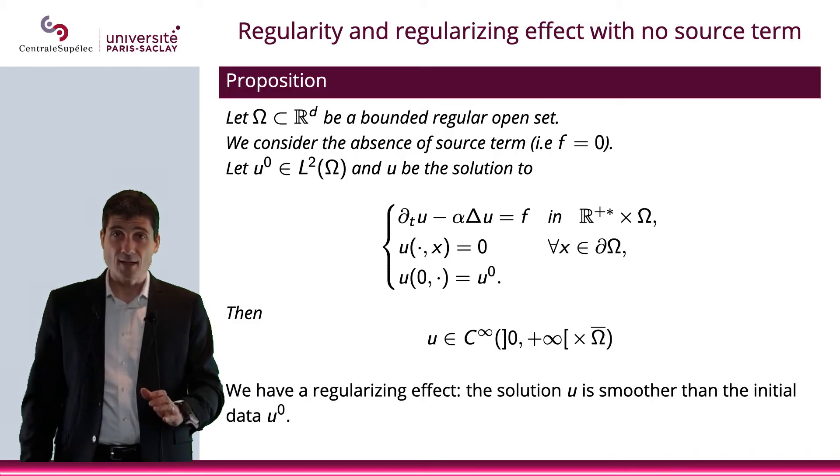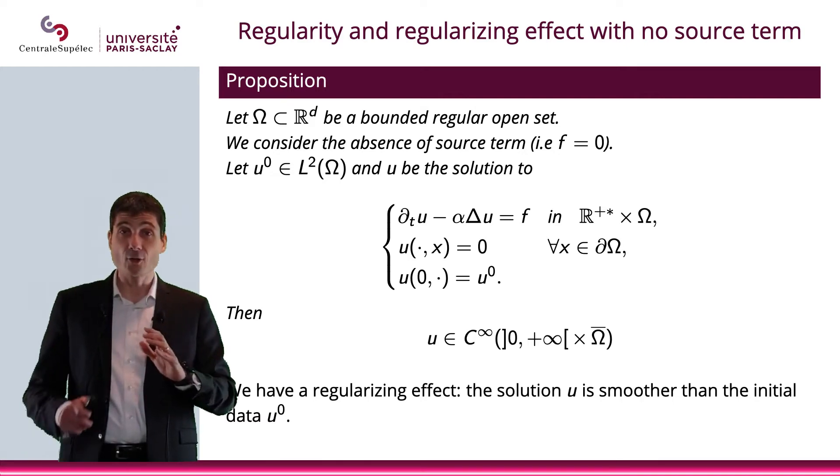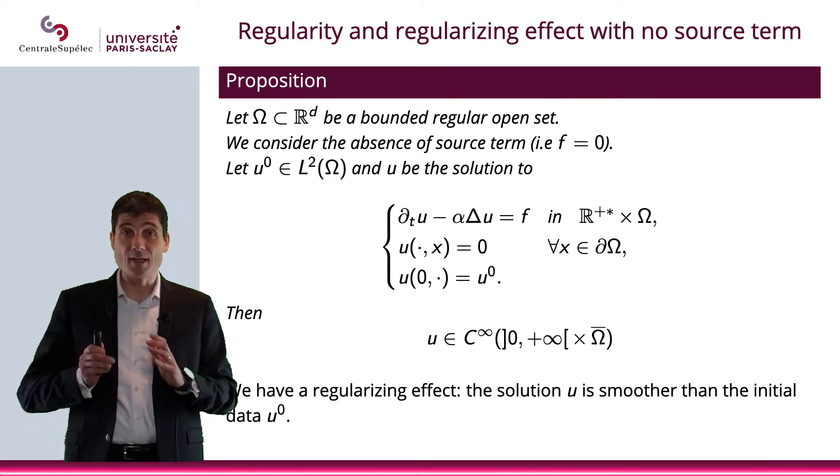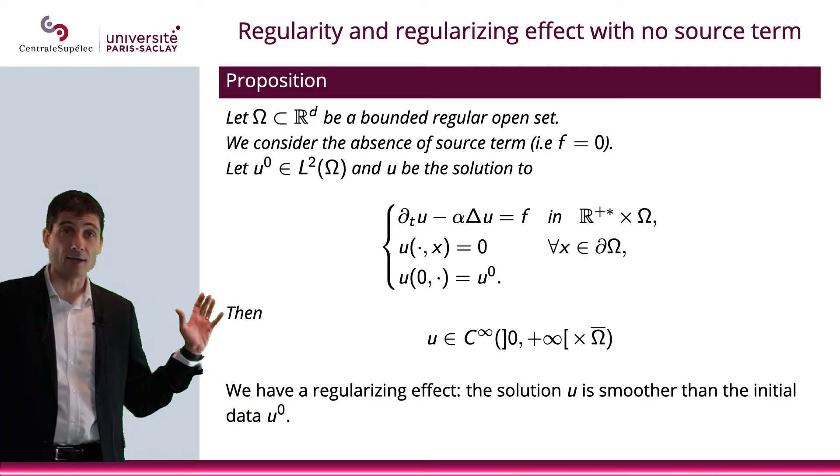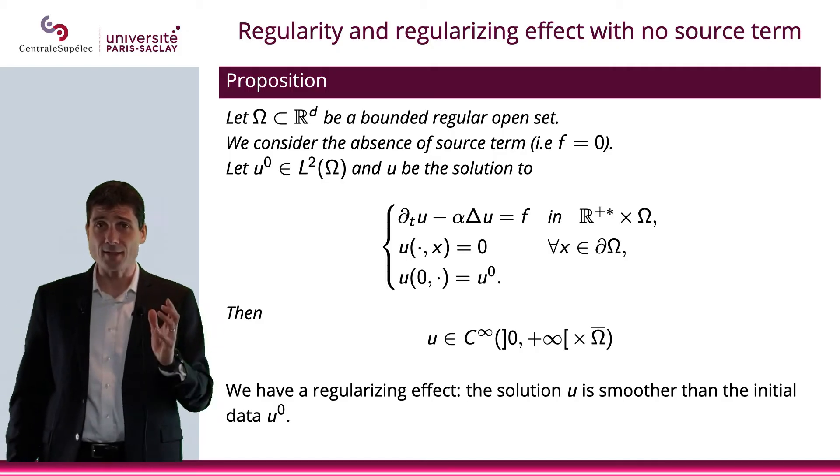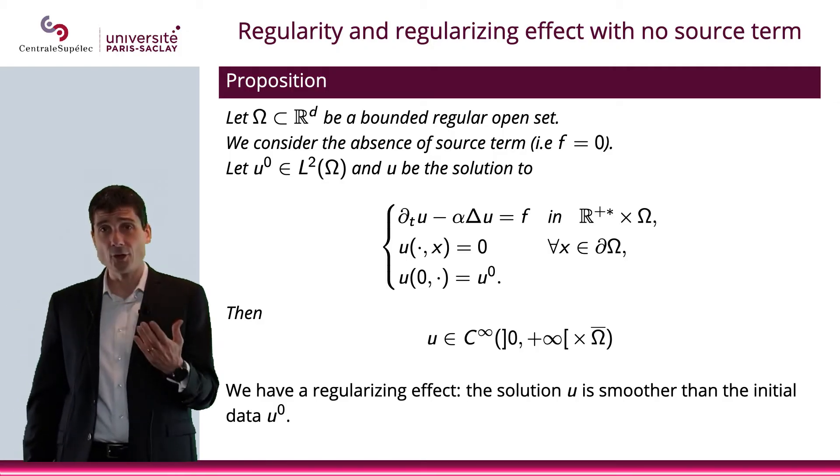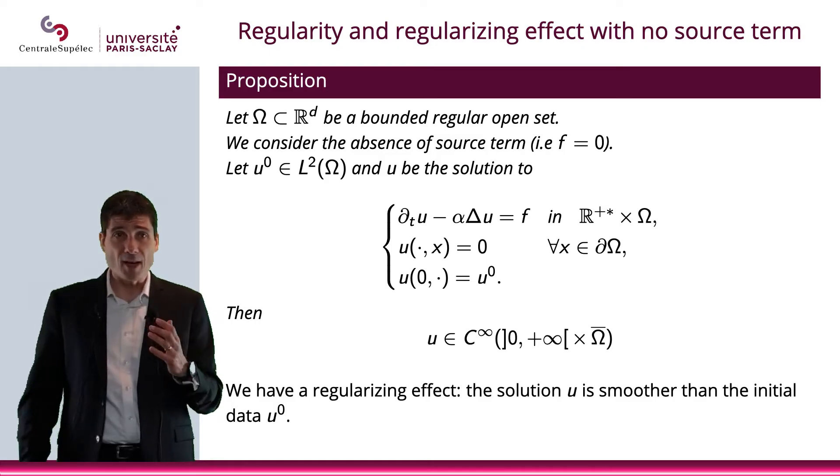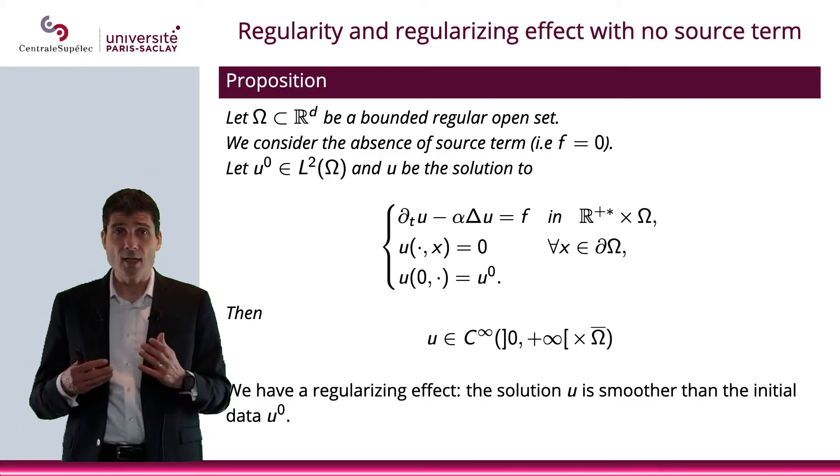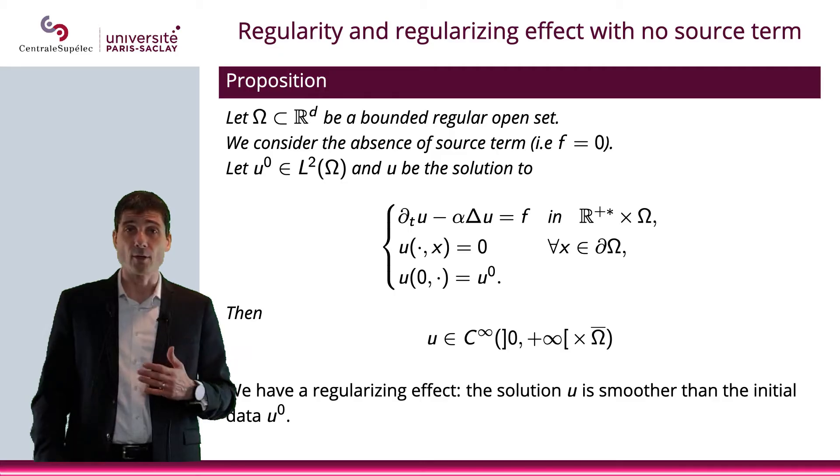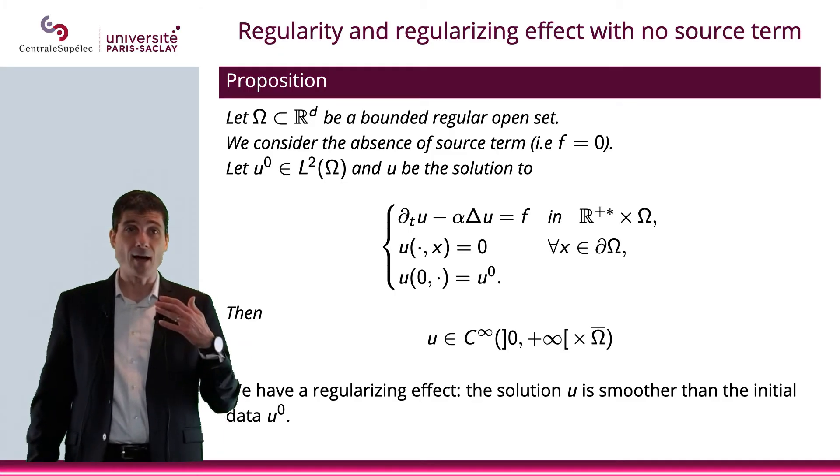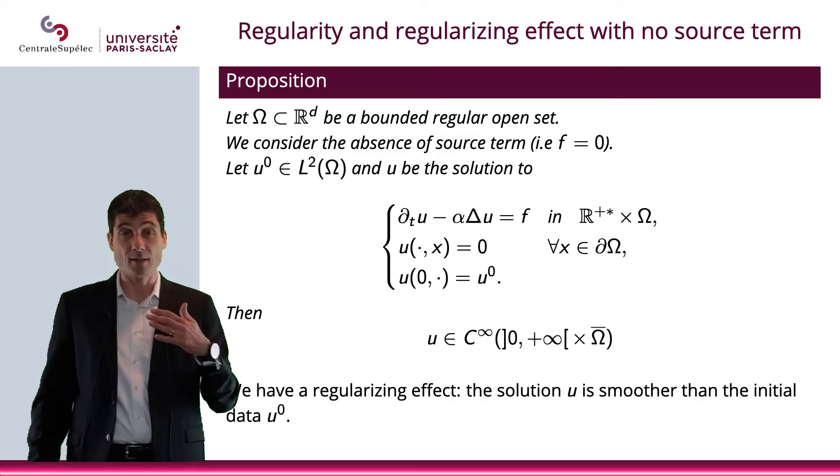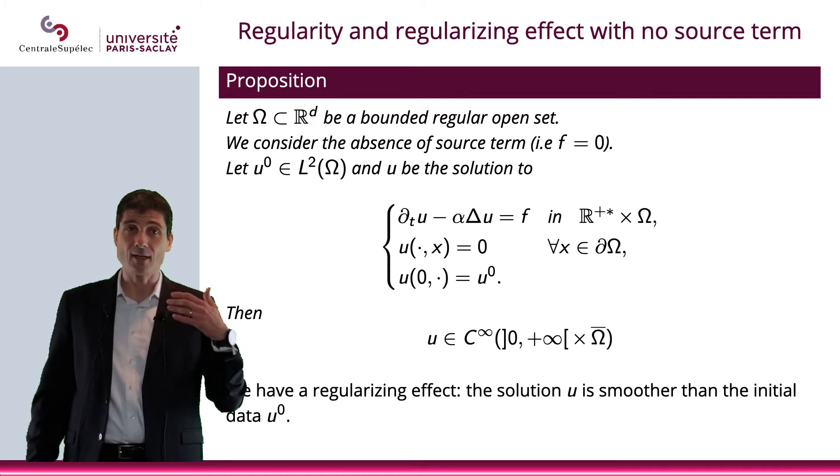Which means that we have a solution u which is so smooth, you cannot even believe it. It's so regular. We have a regularizing effect. I mean, u0 is in L2. That's good. But you see what happens - the solution is extremely regular. It's smoother than the initial data. That is actually almost difficult to believe, but we have a regularizing effect.